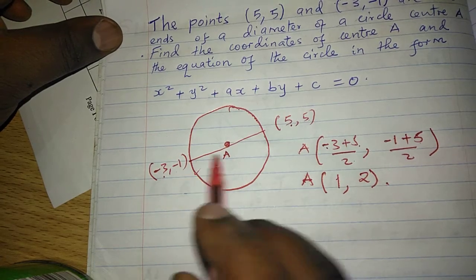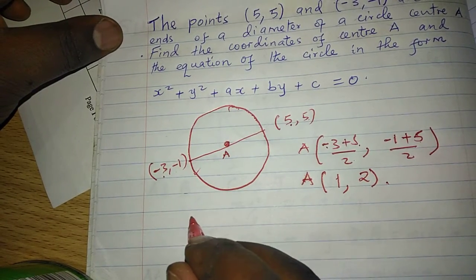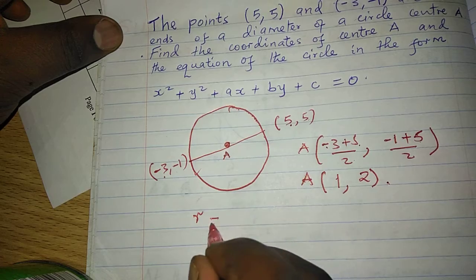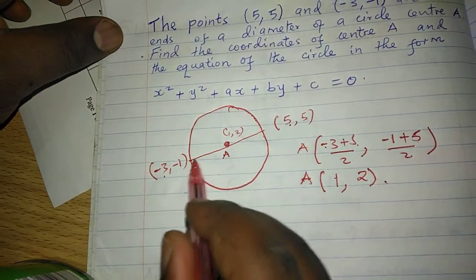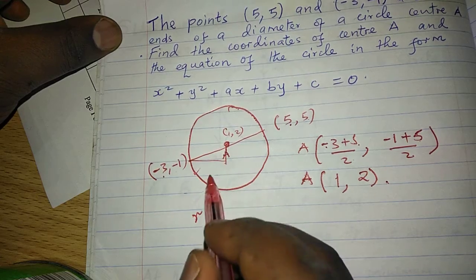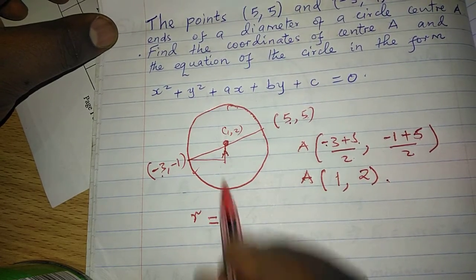After getting the center, now we can get the radius itself. The radius can be gotten by, because we have point (1, 2) here, we can get the length of